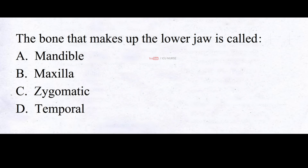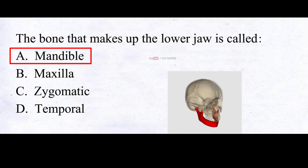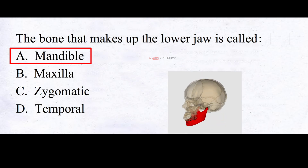The bone that makes up the lower jaw is called: A. Mandible, B. Maxilla, C. Zygomatic, D. Temporal. And the correct answer is A. Mandible. The bone that makes up the lower jaw is called the mandible.